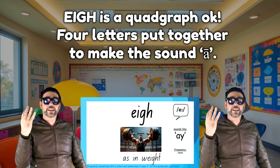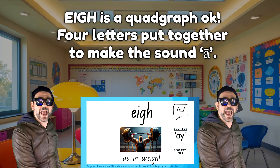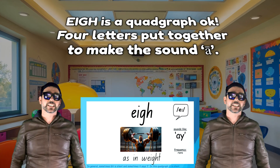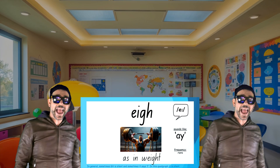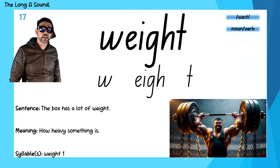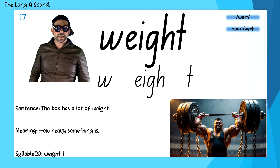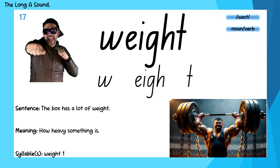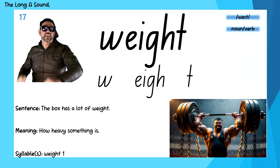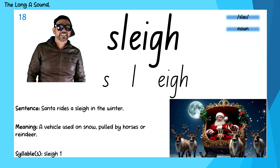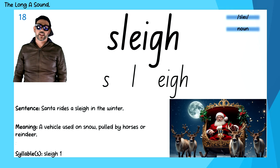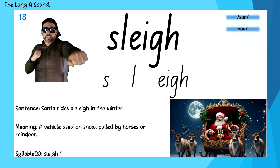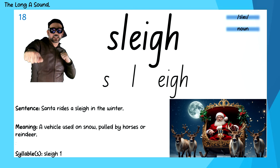E-I-G-H is a quadgraph — four letters put together to make the sound A. Wait — W-A-I-T. Sleigh — S-L-A-Y.